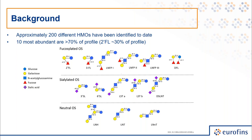If you look at these structures closely, they all start with a basic building block of lactose — that is a beta-1,4-bonded glucose and galactose. Then each of these are extended, either with a fucose to represent your fucosylated, sialic acid to represent your sialated, and N-acetylglucosamine is part of the structure for neutral oligosaccharides.